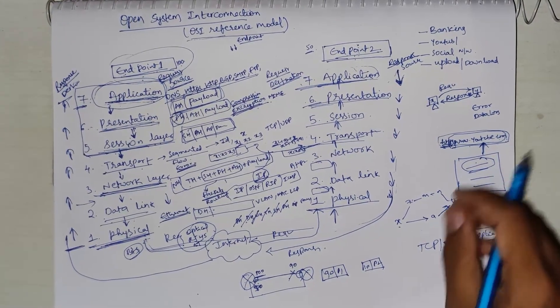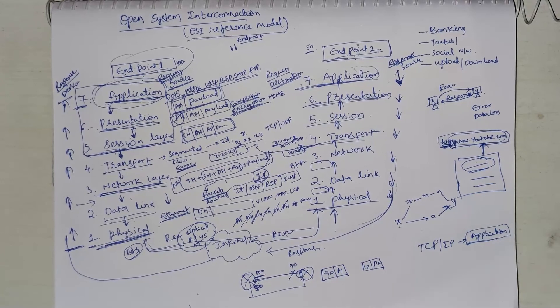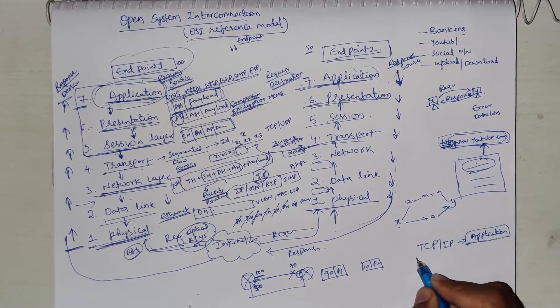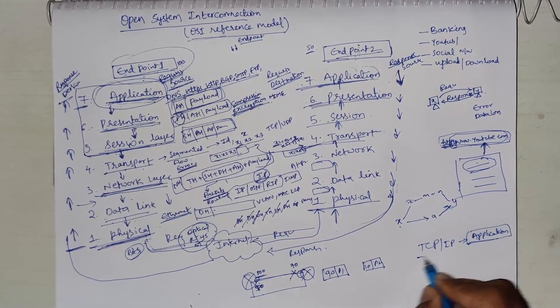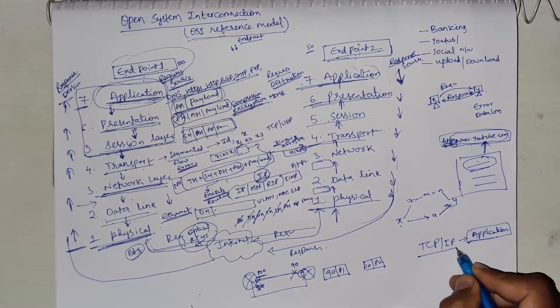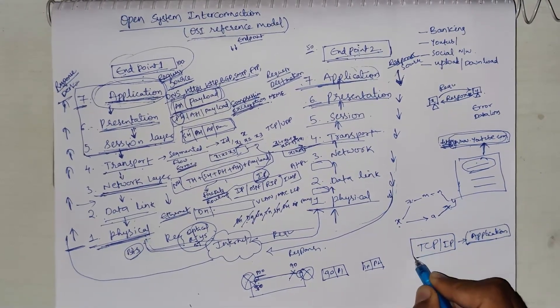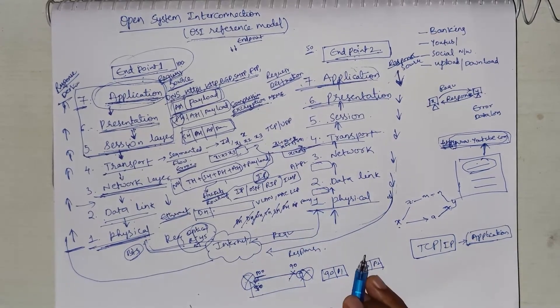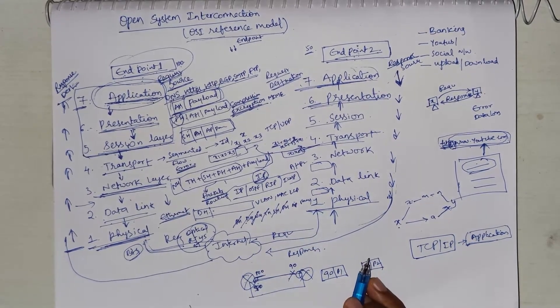To summarize: the application layer is for accessing resources; the presentation layer is for data representation — compression or encryption; the session layer is for managing sessions; the transport layer is for segmentation, flow control, and error control; the network layer is for routing and packet formation; the data link layer is for forming Ethernet frames, MAC addressing, and VLAN; the physical layer converts information into raw bits and sends data over the internet. In further videos we will discuss the TCP/IP model and how it differs from the OSI reference model. Thank you for watching — please share and like.